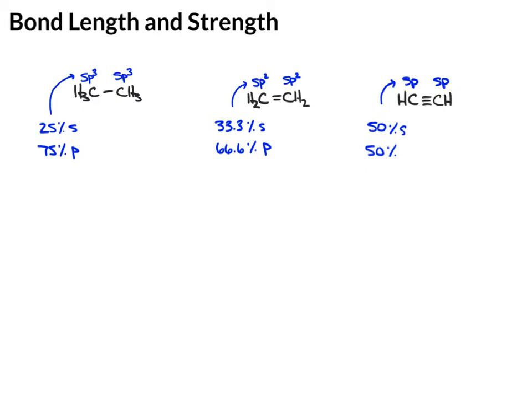And before we think about how this affects the bond length and bond strength, let's think about an s orbital in general. S orbitals are closer to the nucleus than p orbitals, because remember s orbitals are spherical, p orbitals are lobe shaped, so the electrons in s orbitals are closer to the nucleus. And remember the nucleus is positively charged.